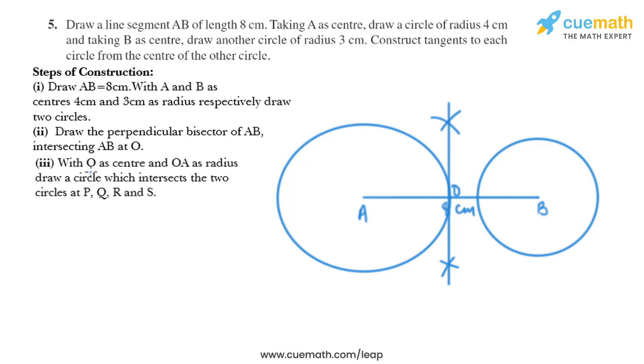Now in the next step, with O as center and OA as radius, draw a circle which intersects the two circles at P, Q, R and S. So we need to draw a circle like this with OA as radius and we'll name these points as P, Q, R and S.